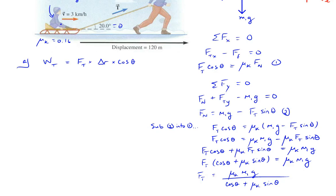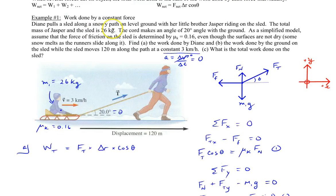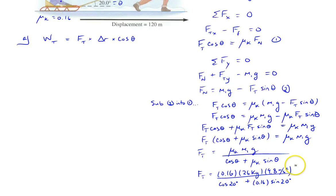Substituting the known values — mass of Jasper and sled is 26 kilograms, angle is 20 degrees, and μk is 0.16 — we plug all that data into the expression and end up with a force of tension of approximately 41 newtons (40.9969 N rounded off).